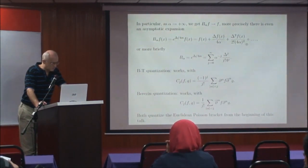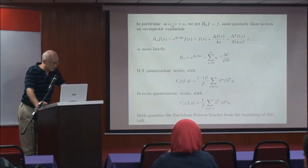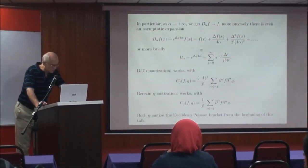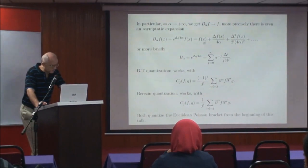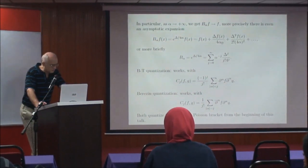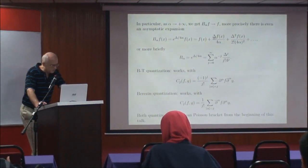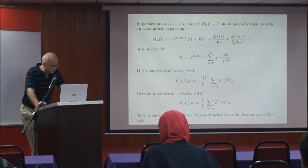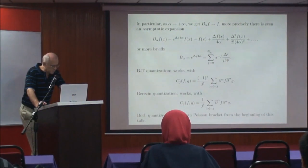So this means that the Berezin transform of the Fock space is a very familiar object. Expanding the exponential into the Taylor series — which of course needs some technical justification, but everything works out fine — one can show that the Berezin transform indeed has this kind of asymptotic expansion as alpha tends to infinity. Instead of alpha we take 1 over h, so the asymptotic expansion gives us Laplacian over 4 as the first order term, and Laplacian squared over 2 times 4 squared as the second, and so on.